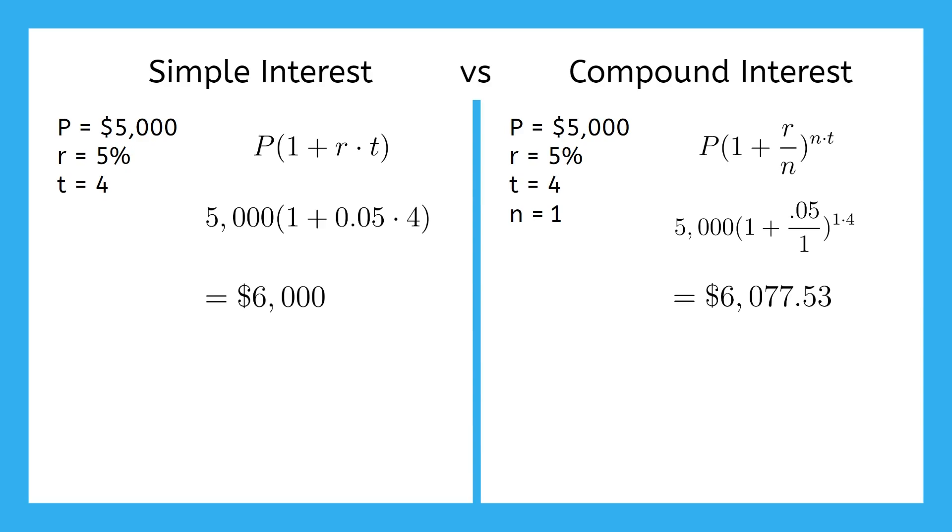The compound interest, though, will come out to $77 more. And that's just with it compounding once a year. Most student loans actually compound daily. That's 365 times every year. So a more realistic estimate for this loan would be $6,106.93, over $100 more than if it were simple interest. That's a lot of extra money you're paying on top of repaying the money you borrowed. And that's just for one semester of college.